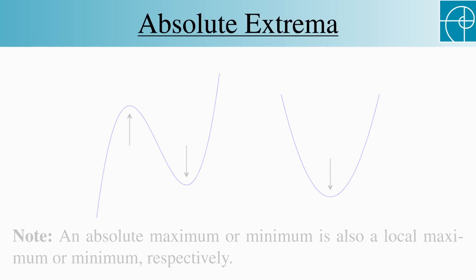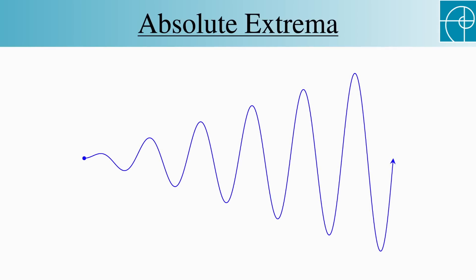Worse than either of these is this graph, which not only has no absolute extrema, but has infinitely many local extrema. If you tried looking for absolute extrema at the places where there's a horizontal tangent line, you'd be quickly frustrated if you didn't see a pattern. The point is that finding absolute extrema can be very hard.